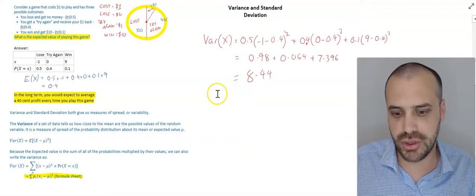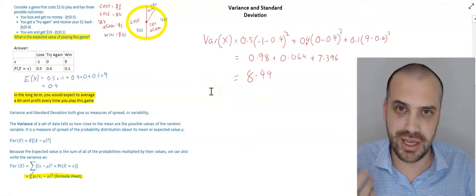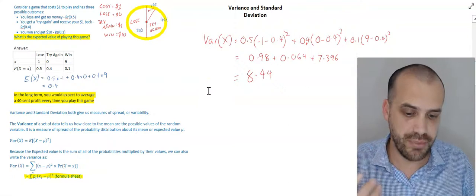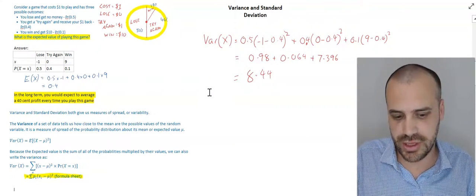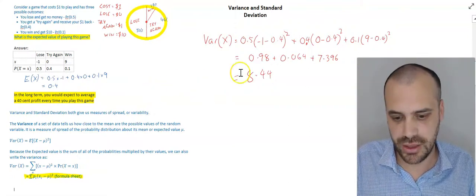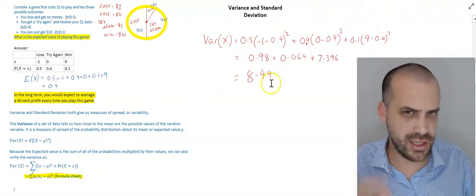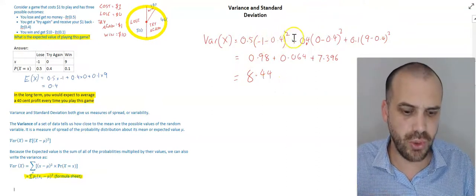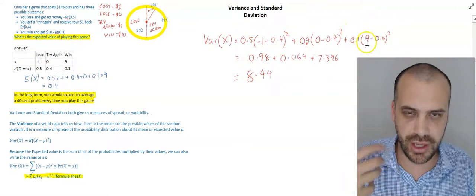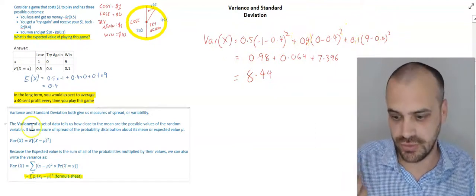But I can also just use a calculation called the standard deviation. Now, the standard deviation is nice because it's in the same units that the mean is in. You can see variance isn't in the same units because we've been squaring our x values here. So, the units have changed.